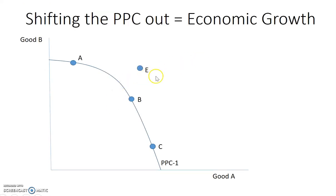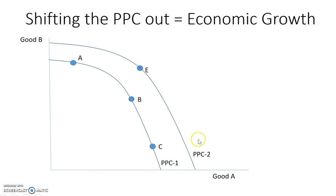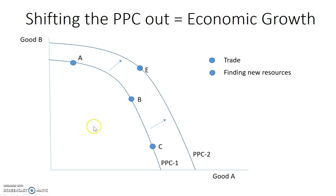The final topic is shifting out the PPC. The goal of an economy is to have economic growth, and there are many ways to get the whole curve to shift out to point E. Visually, economic growth through the PPC is shown as the curve shifting to the right — always include arrows when showing that. One way is through trade: you specialize in what you're good at, use comparative advantage, trade with another country, and get more of both goods. Another way is that new resources could be found — maybe new oil is discovered and utilized to make other goods.